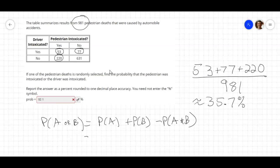So that would look like the probability of pedestrians - how many total pedestrians are there? 220 and 53, that's 273 out of 981 - plus the drivers intoxicated, 77 plus 53, that's 130, minus the probability of them both being intoxicated, those 53. Essentially what this does is it counts all of the pedestrians intoxicated and all of the drivers intoxicated, but then that's double counted the 53, so we subtract that overcount.